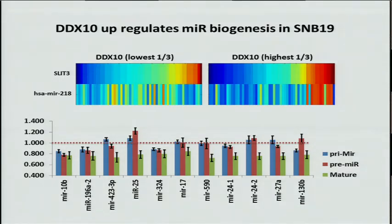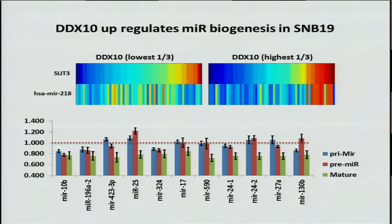And we see that in the top right. When the expression of DDX10 is high, an increase in the expression of SLIT3 is followed by an increase in the expression of MIR-218. But this does not happen in the top left where the expression of DDX10 is low. This to us would be an indicator that DDX10 is somehow regulating the biogenesis of MIR-218. Indeed, upregulation of DDX10 in the glioblastoma cell line SNB-19 led to upregulation of both the pre- and the mature MIR-218.